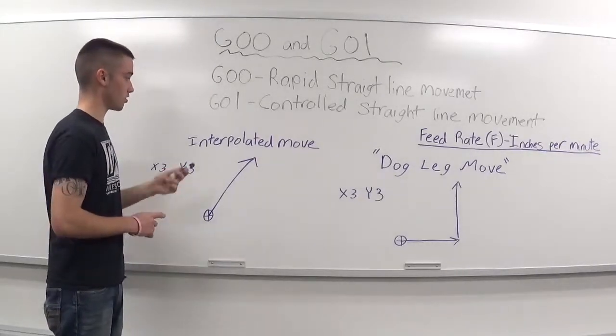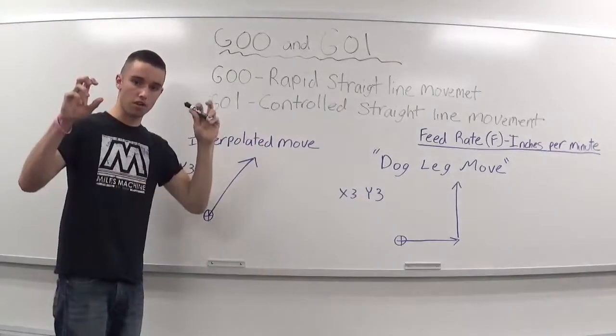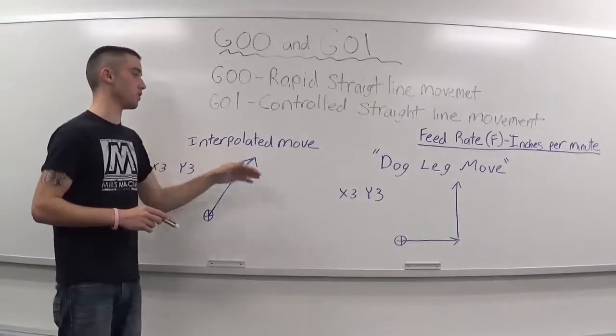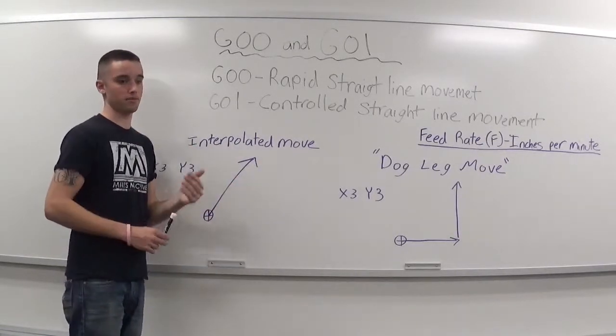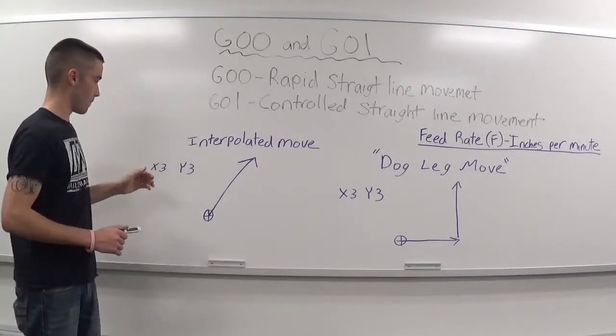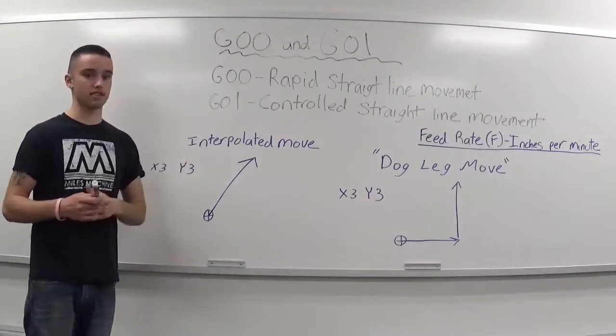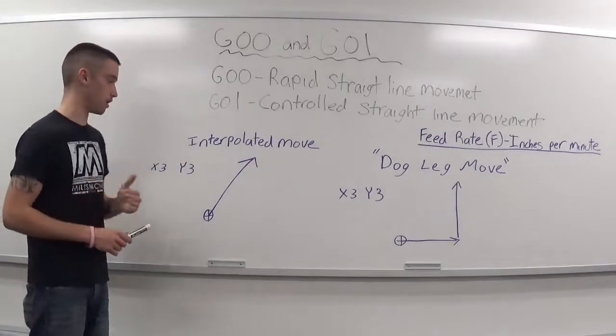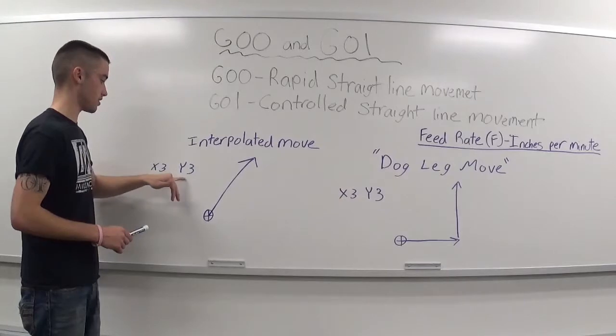You have two different movements. You have an interpolated move and a dogleg move. An interpolated move is what you'll commonly see today in CNC machines. An interpolated move is when all axes move at the same time. So if you have two different axes called up,